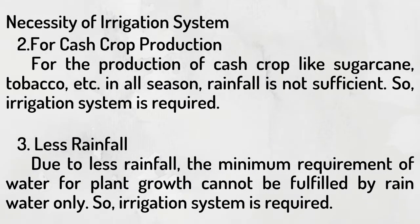Number 2: For cash crop production. For production of cash crops like sugarcane, tobacco, etc. in all seasons, rainfall is not sufficient, so an irrigation system is required. Number 3: Less rainfall. Due to less rainfall, the minimum requirement of water for plant growth cannot be fulfilled by rainwater only, so an irrigation system is required.